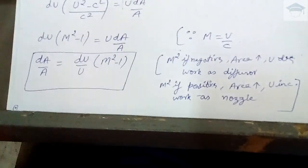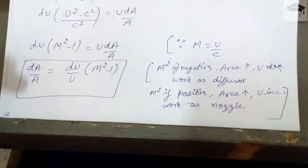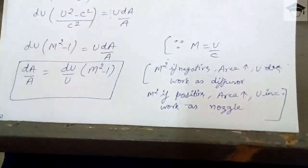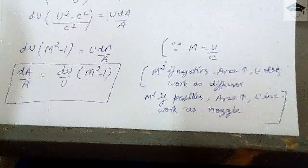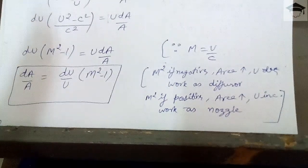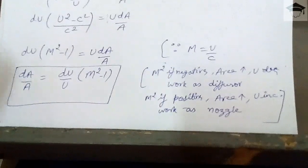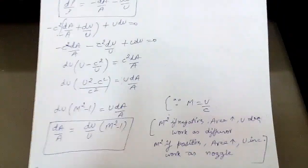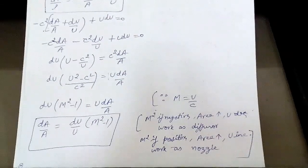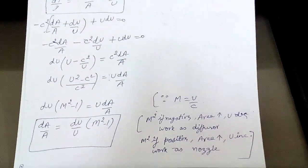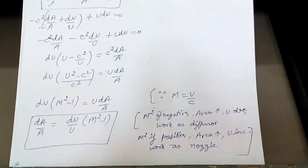From this equation, given a particular Mach number, we can determine whether the flow is subsonic or supersonic and whether the device works as a diffuser or a nozzle. This was the video regarding the relation between area and the Mach number. In the next video I will continue compressible flow. Please like, share, and subscribe. Thank you, take care, bye.